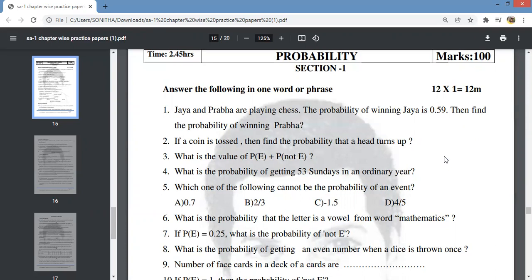The probability of P of E plus P of not E is equal to 1. So if the probability of P of E is 0.59, then P of not E equals 1 minus 0.59.